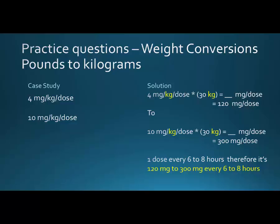Now let's look at the case study and answer the question. If we have 4 milligrams per kilogram per dose, we multiply by the 30 kilogram child and we end up with 120 milligrams per dose on the bottom end. Then we do the same thing: 10 milligrams per kilogram per dose times 30 kilograms gives 300 milligrams per dose. The kilograms cancel each other out top and bottom. So the answer is 120 milligrams to 300 milligrams every six to eight hours.